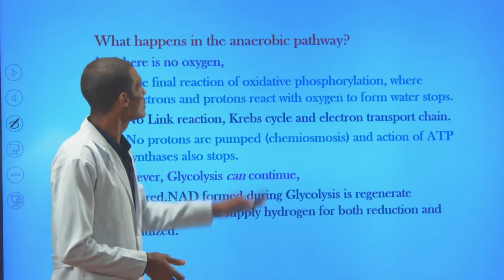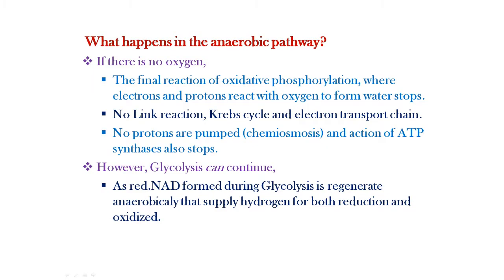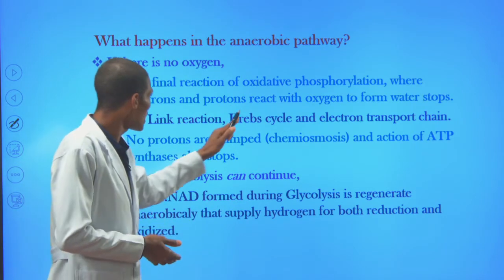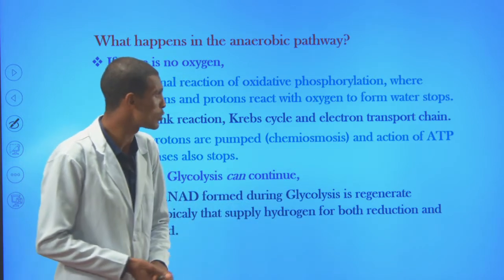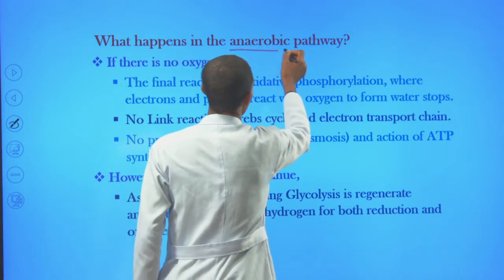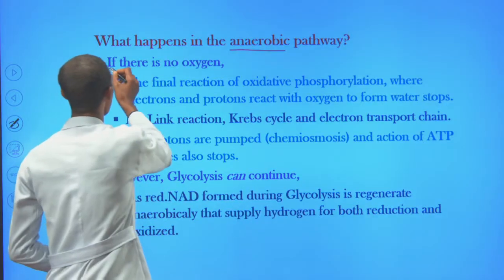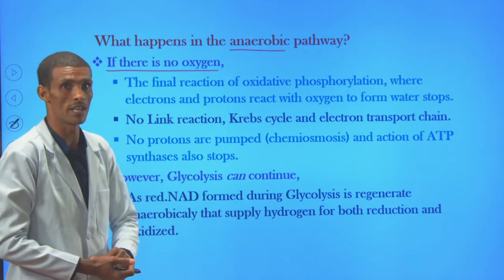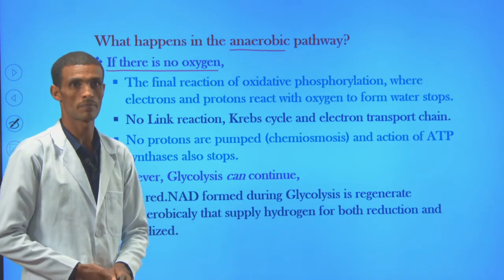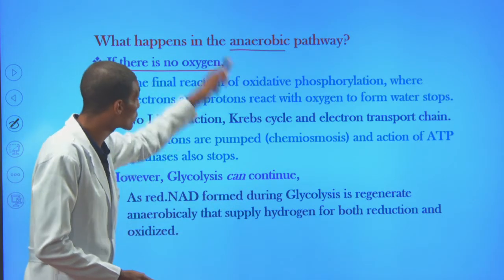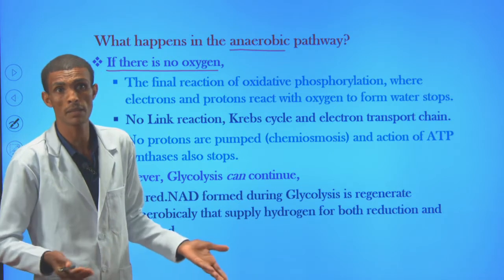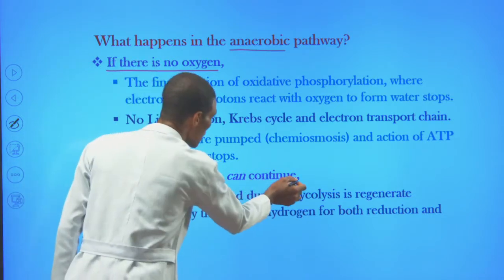So the cells develop another technique to generate their ATP or energy. If there is no Krebs cycle, no link reaction, no chemiosmosis or electron transport chain, the cells continue generation of energy anaerobically. The absence of oxygen means there is no generation of energy through those steps, but there is another technique to produce ATP. The ATP produced under this pathway is by substrate level phosphorylation — it may be in an alcoholic or lactic manner.